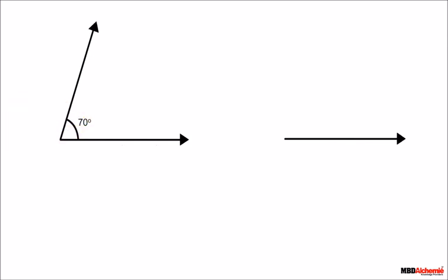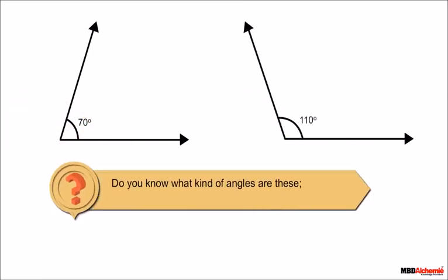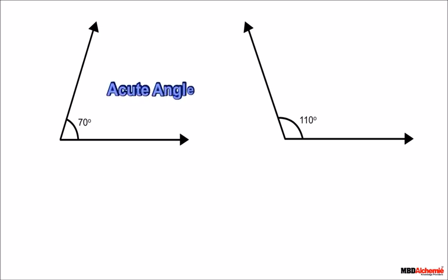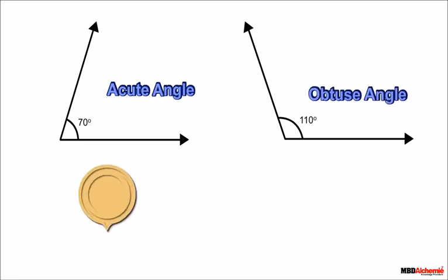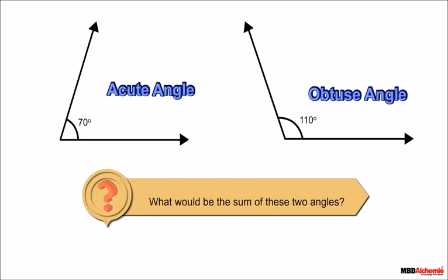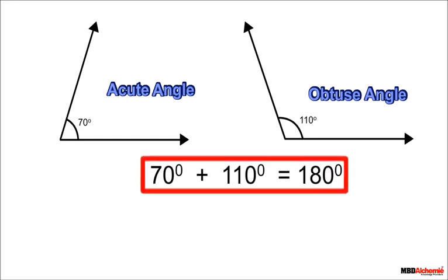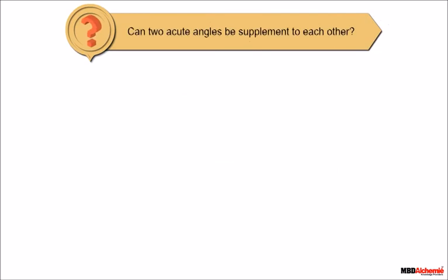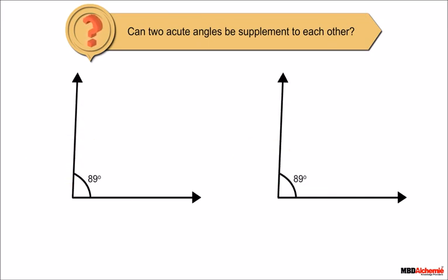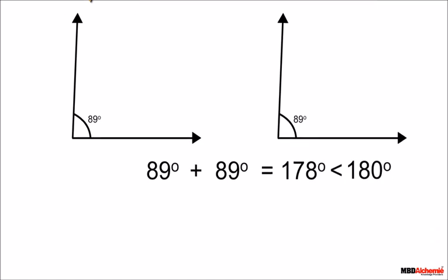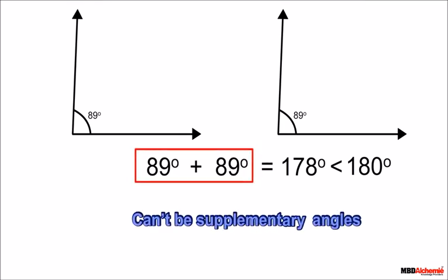Let's draw two angles that measure 70 degrees and 110 degrees. The angle 70 degrees is an acute angle, and 110 degrees is an obtuse angle. The sum of these two angles is 180 degrees. If the sum of the measure of two angles is 180 degrees, then they are called supplementary angles. Two acute angles cannot be supplementary, since even 89° + 89° = 178°, which is less than 180 degrees.